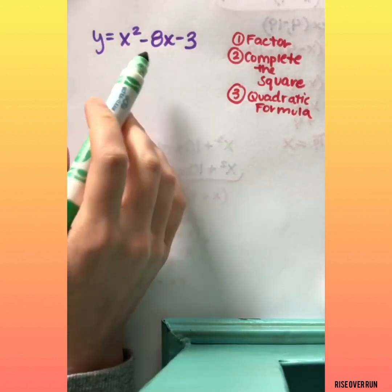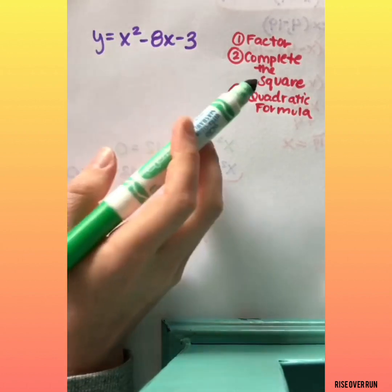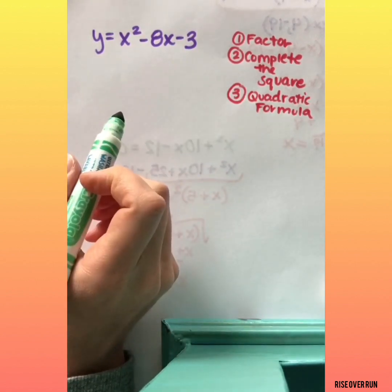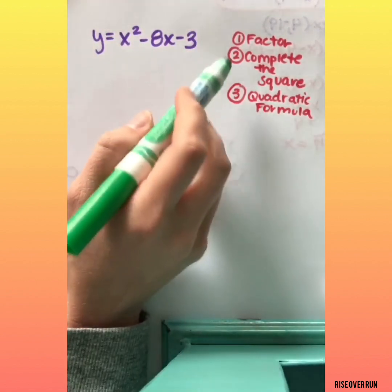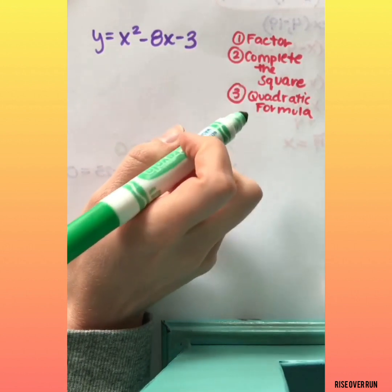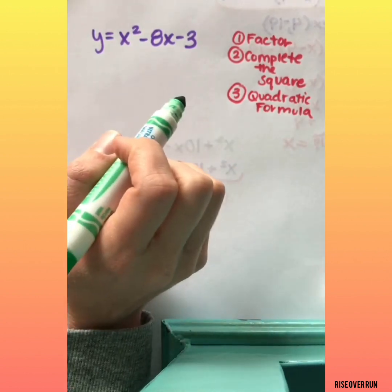When it comes to finding the zeros of a quadratic, we usually have about three options. First, factor, complete the square, or use the quadratic formula. I recommend first seeing if you can factor. Then complete the square. And last resort, use the quadratic formula.